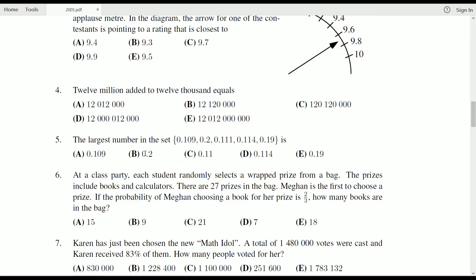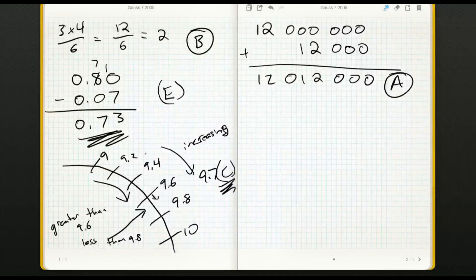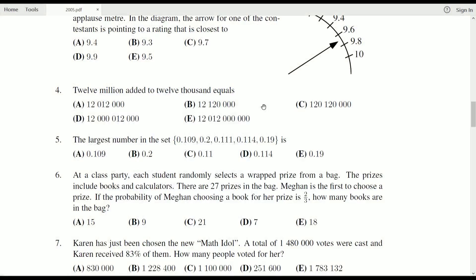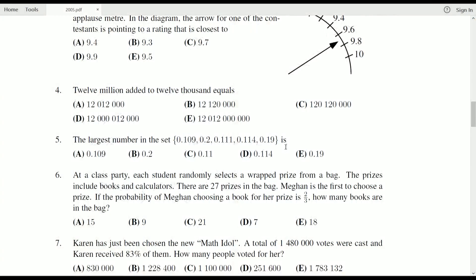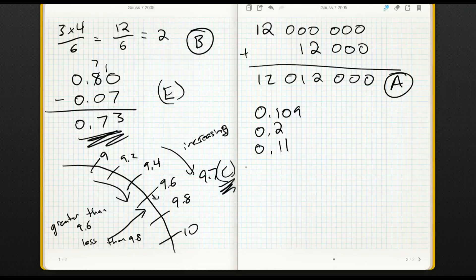But if we needed to, we could always grab our notepad and start writing these numbers out. What were they? 0.109, 0.2, 0.11, 0.114, and 0.19.